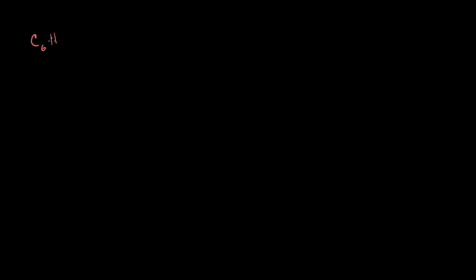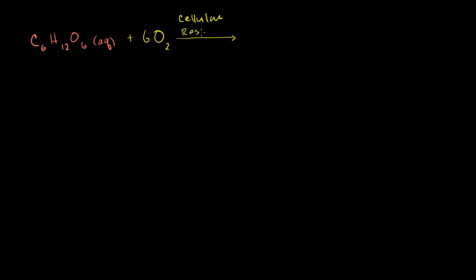Now that we have a little bit of a review of oxidation and reduction under our belts, let's see if we can apply what we now maybe re-understand to cellular respiration. So cellular respiration, for every mole of glucose, is C6H12O6. We combine that — maybe that's in an aqueous state, it's dissolved in water — we combine that with six moles of molecular oxygen, and then our cells perform cellular respiration in a whole series of steps.